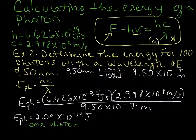So how do you think we can get the energy for 100 photons? So if you are thinking that you should multiply that energy of one photon by 100, because we have 100 of them, you would be right.